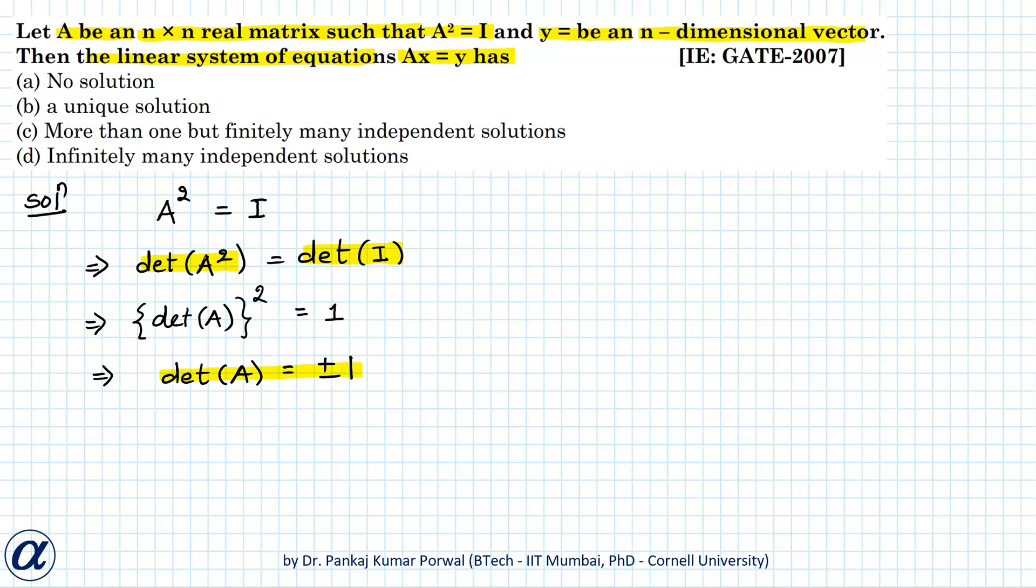Determinant of A is always either plus 1 or minus 1, and in both cases this is not equals to 0.